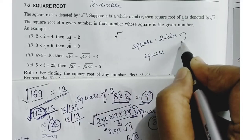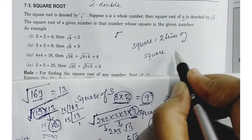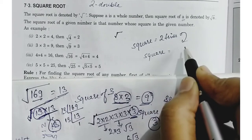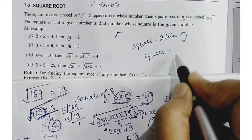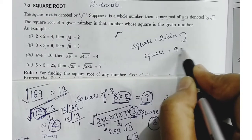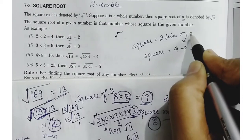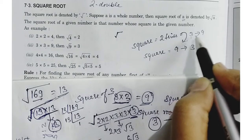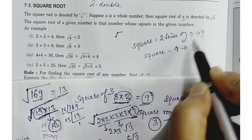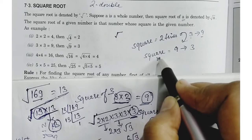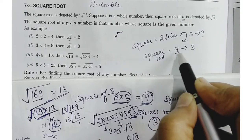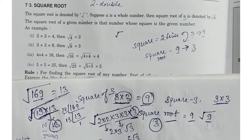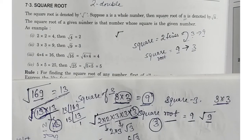لیکن square root میں کیا کریں گے — آپ just اس کا opposite کریں گے. مطلب جو numbers ہیں وہ 2-2 کا pair بنا کر کے ہم اس کو ہٹا دیتے ہیں. جیسے 9 تھا تو اس کا 3 ہو جائے گا — یہاں 3 تھا اور اس کا 9 ہو جائے گا. مطلب 3 تھا، 2 times ہم نے لکھا، multiply کیا اور ہمیں 9 مل گیا. لیکن square root جب ہوتا ہے تو 9 ہے، اور اس کا square root 3 ہو گیا.